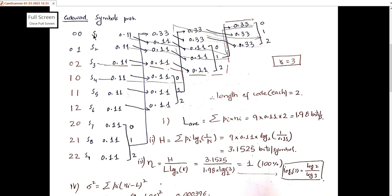To get the code word for s1, we follow the forward path through the tree. For s1 with probability 0.11, the path follows several arrows. When assigning the code, we move backward: the assignments give code word 00. For s2, following the path backward gives code word 01.